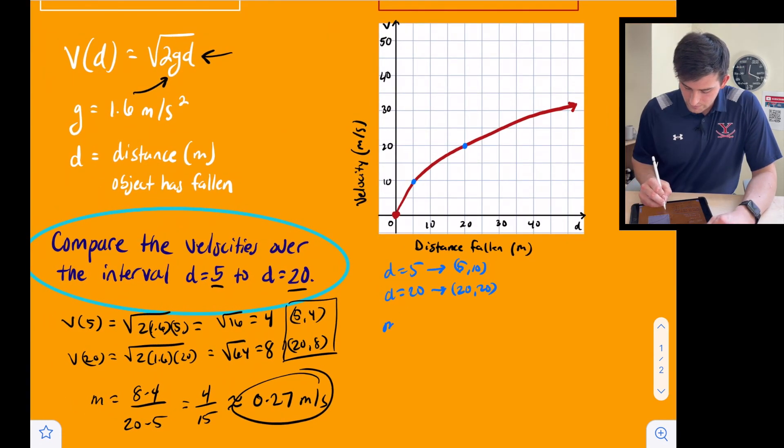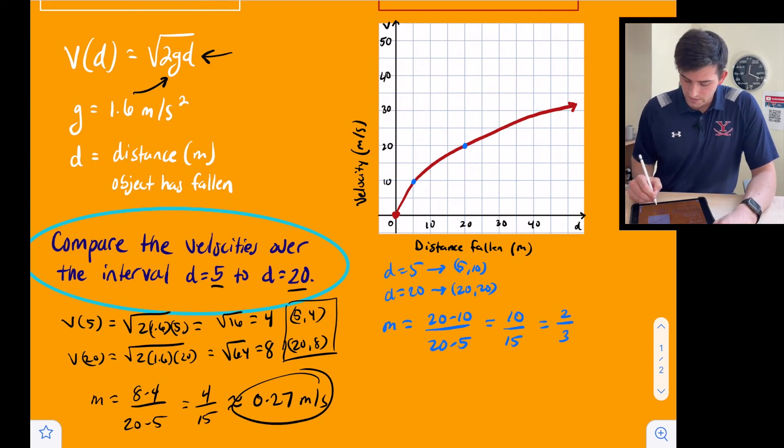So m equals 20 minus 10 over 20 minus 5. This gives us 10 over 15 which reduces to two-thirds, and so now we can say that it would be approximately 0.67, and we'll write that down here at the bottom.